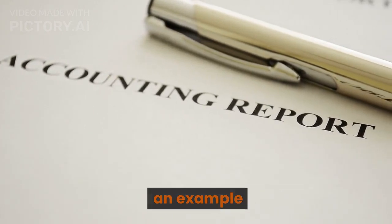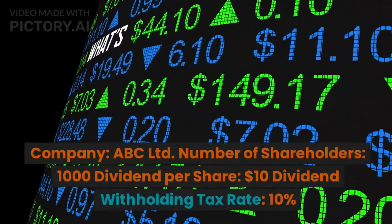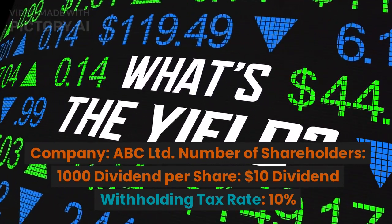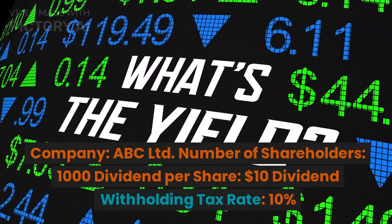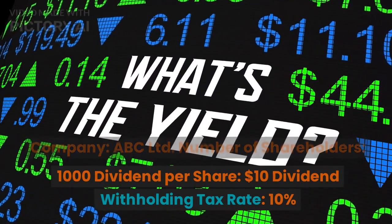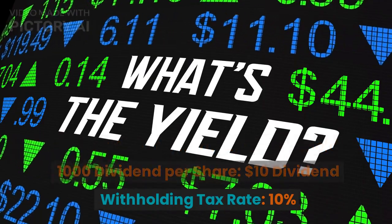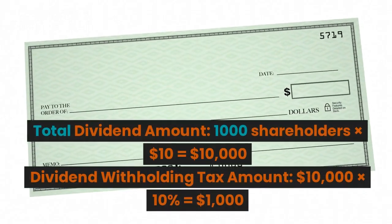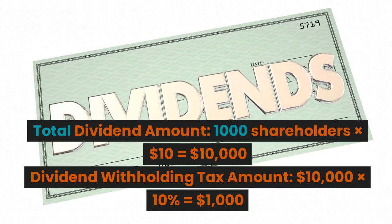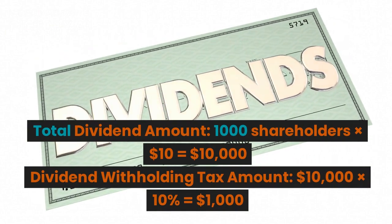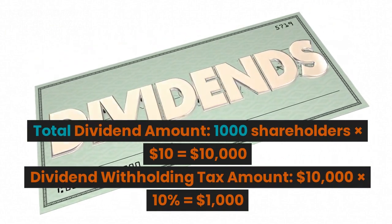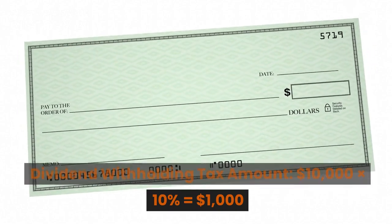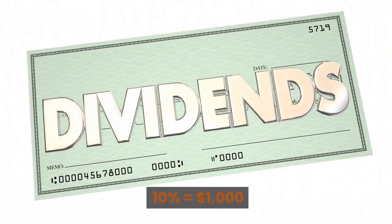Let's consider an example. Company: ABC Limited. Number of shareholders: 1,000. Dividend per share: $10. Dividend withholding tax rate: 10%. Total dividend amount: 1,000 shareholders × $10 = $10,000. Dividend withholding tax amount: $10,000 × 10% = $1,000.